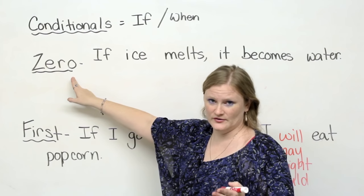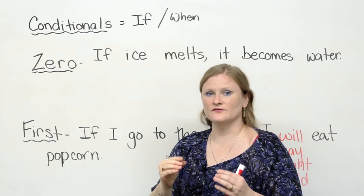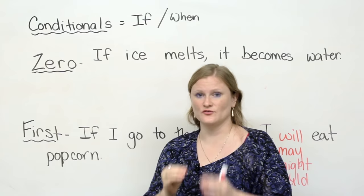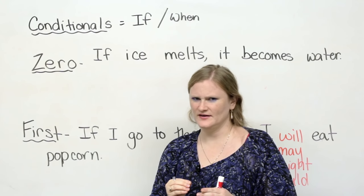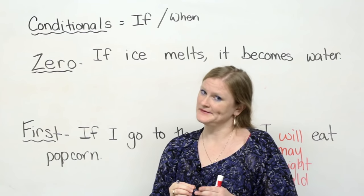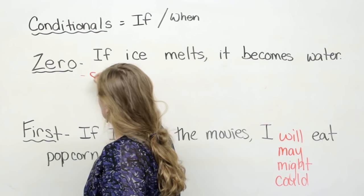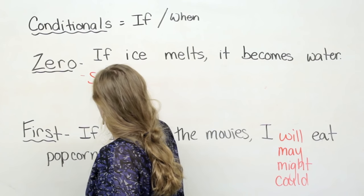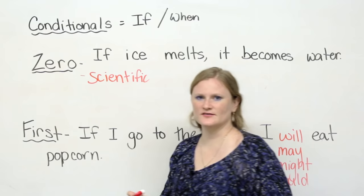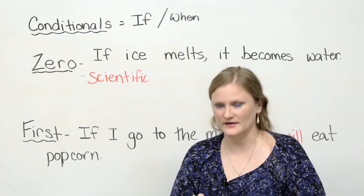So, the first one I'm going to teach you is zero conditional. Zero conditional, you can think of as something that is always 100% true. Is anything really 100% always true? That's a debate. But if you think of things that I like to call scientific things, things that have been tested and tried, experimented upon.